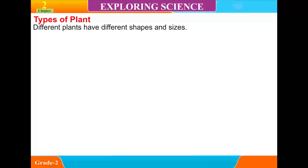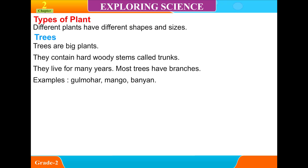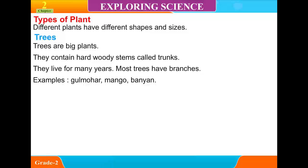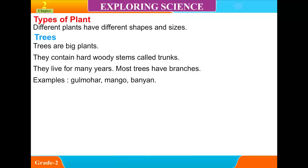Types of Plant. Different plants have different shapes and sizes. Trees are big plants. They contain hard, woody stems called trunks. They live for many years. Most trees have branches.